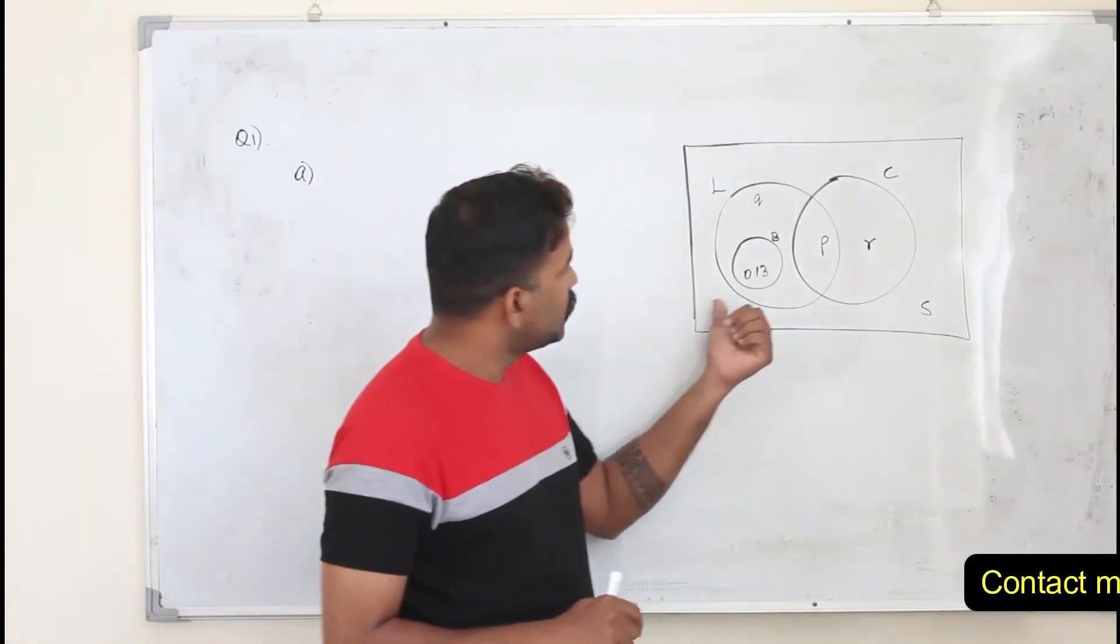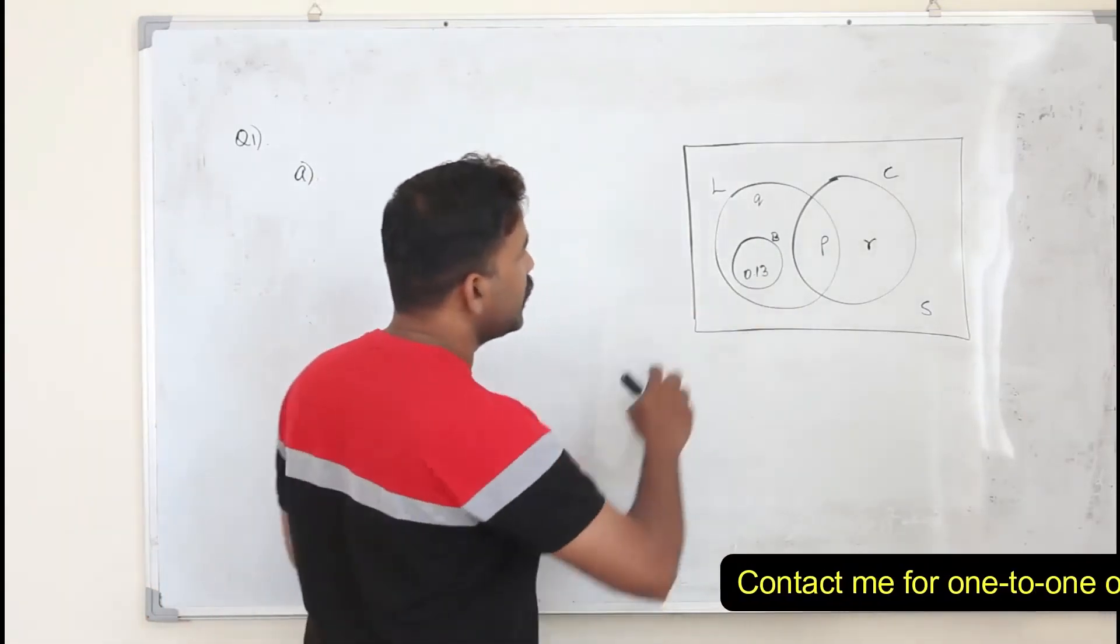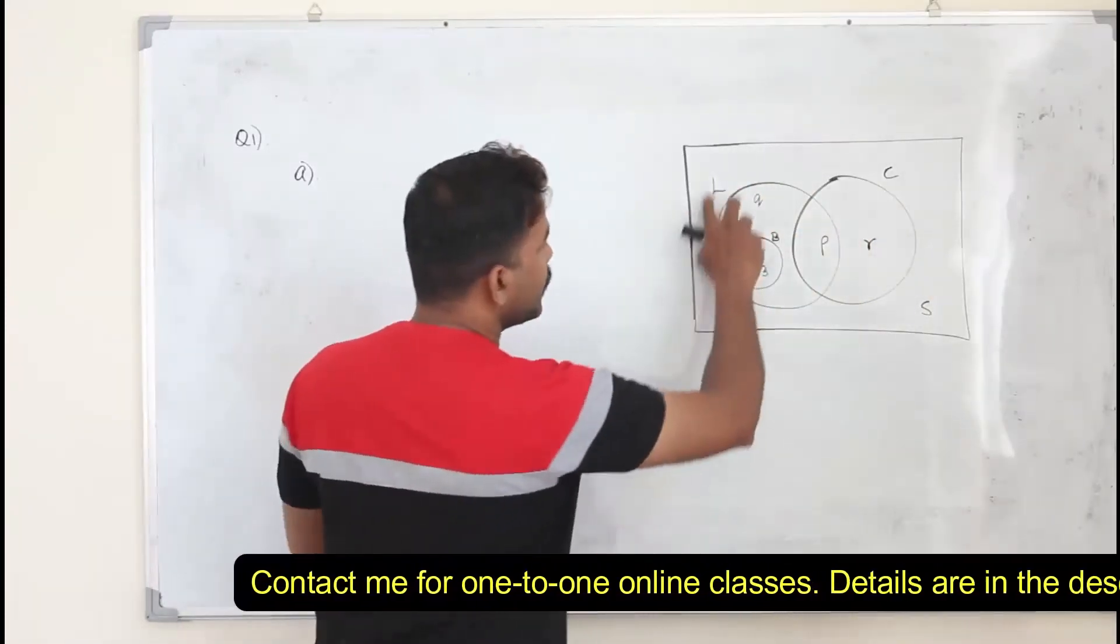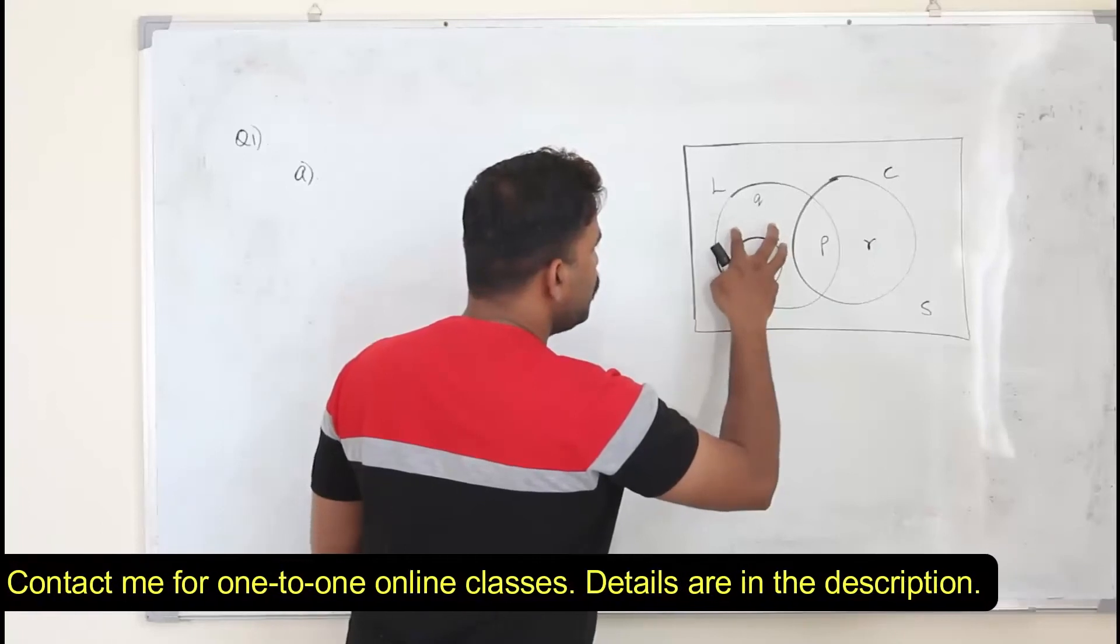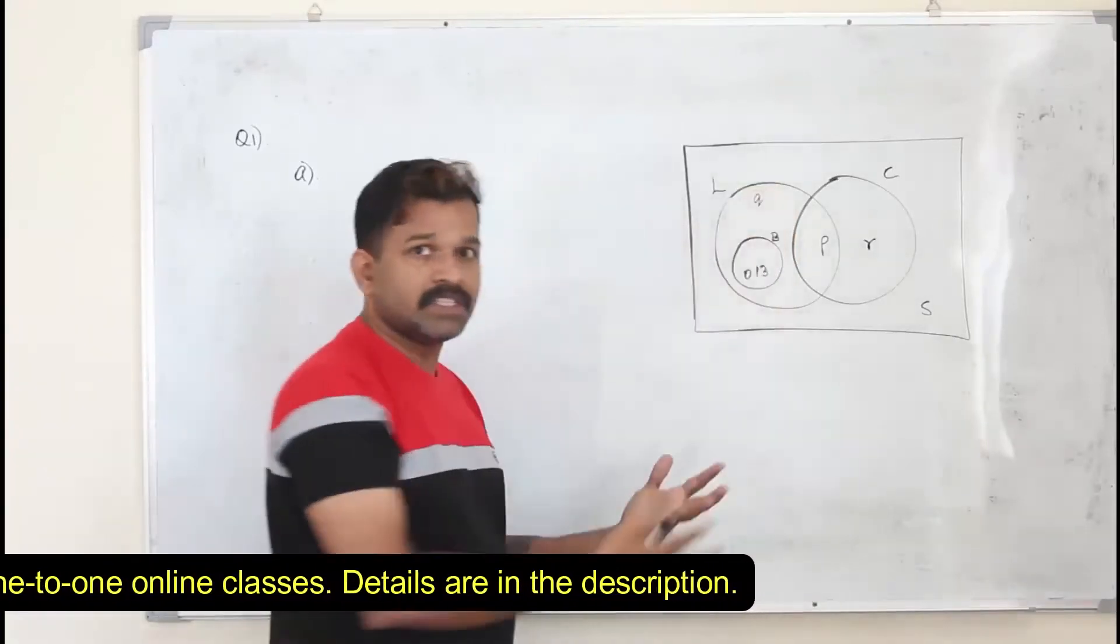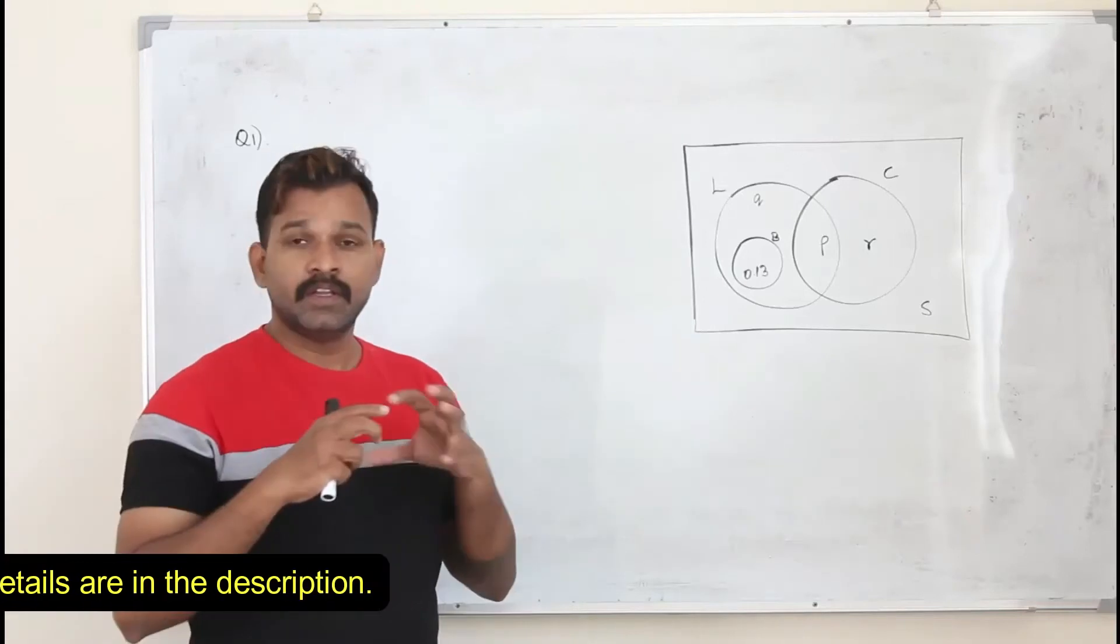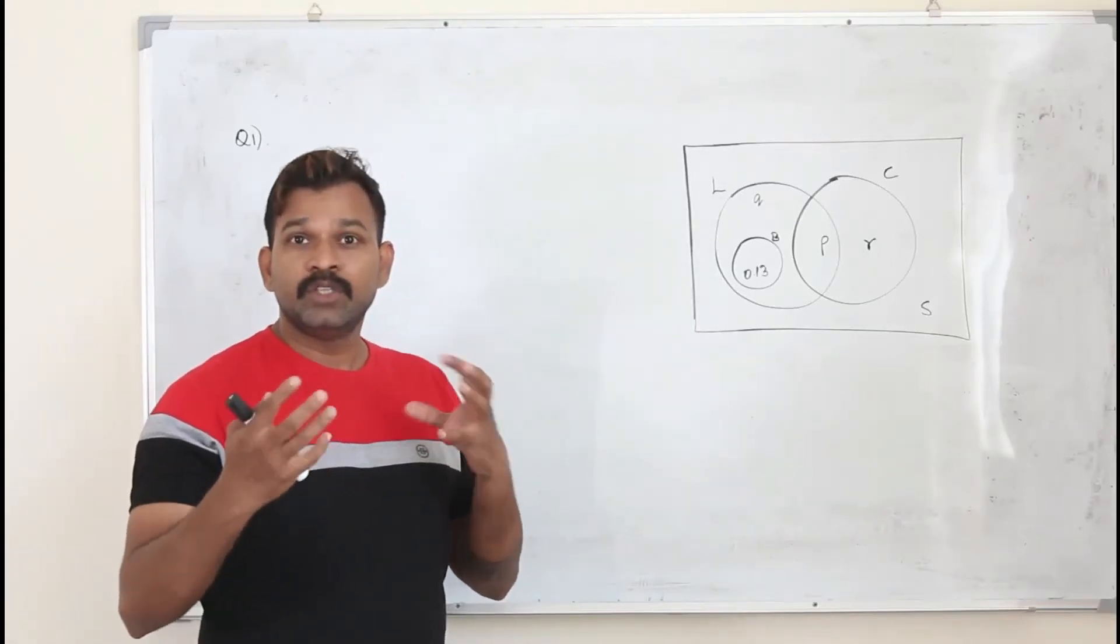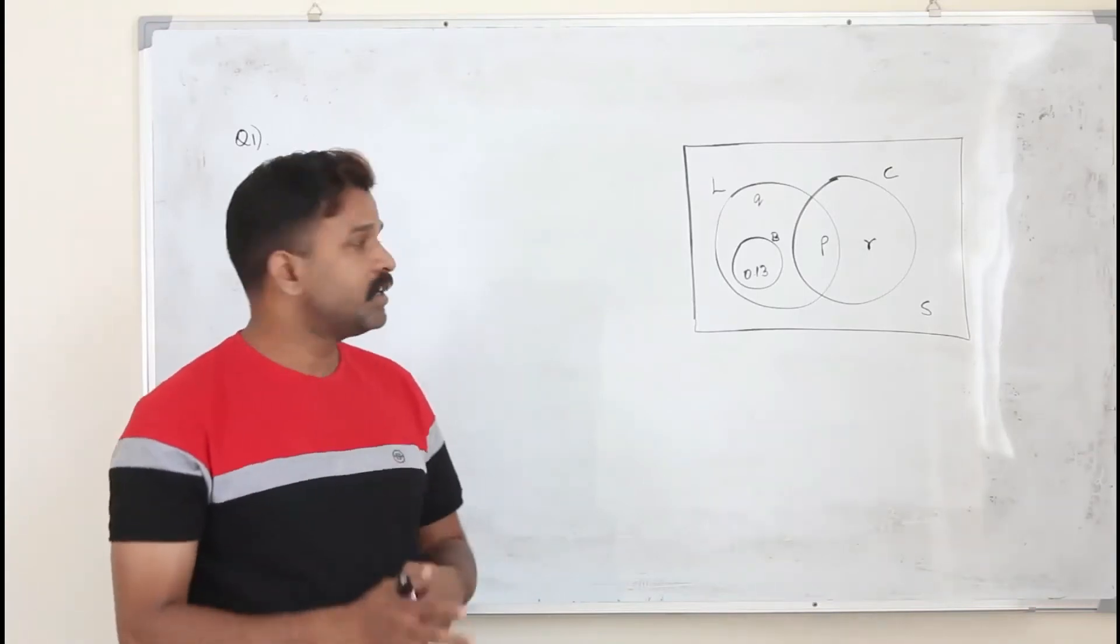That is, two circles without intersecting. If you take L and C, they both intersect here. If you take L and B, B is inside L, which is a subset, kind of intersection. You need to check whether there are any two circles without intersecting.